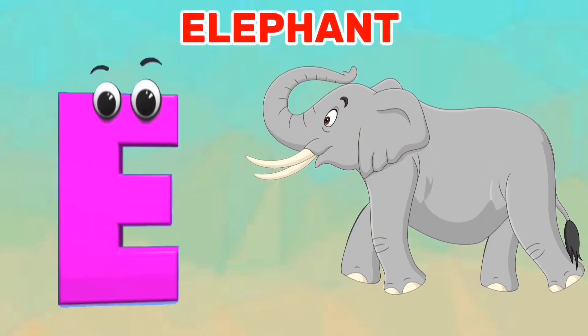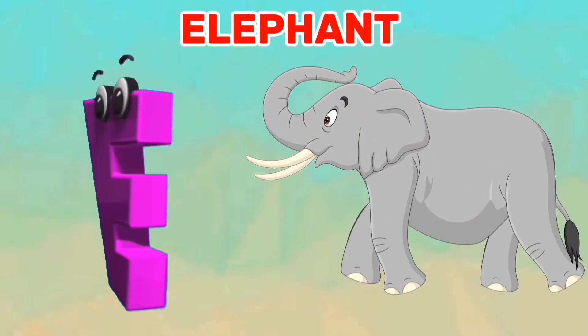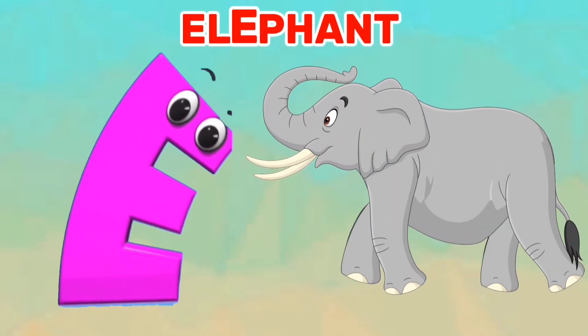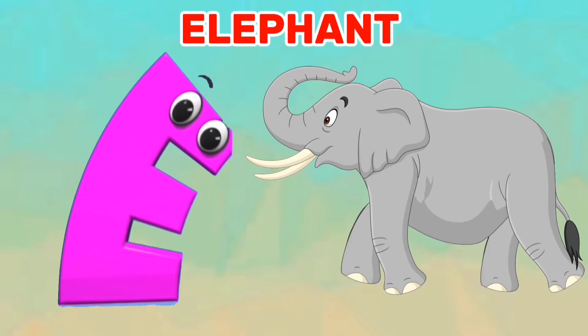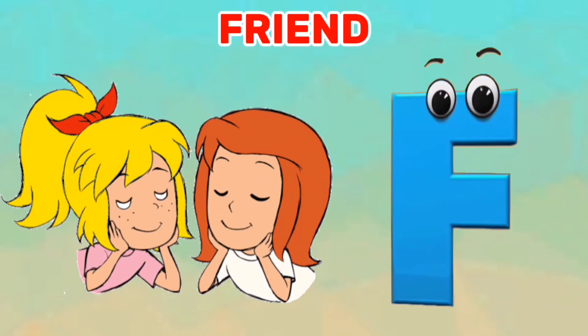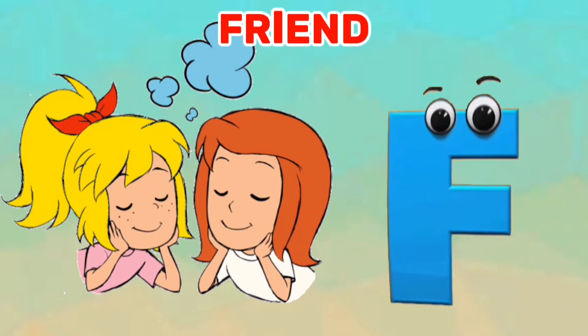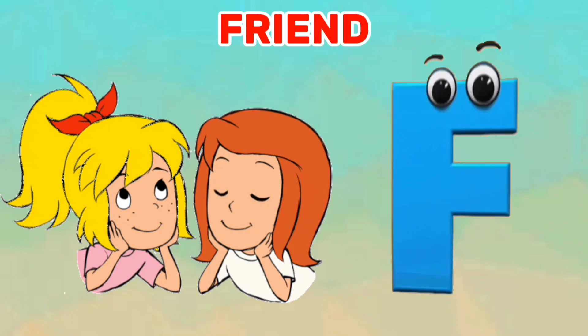E is for elephant, e, e, elephant. F is for friend, f, f, friend.